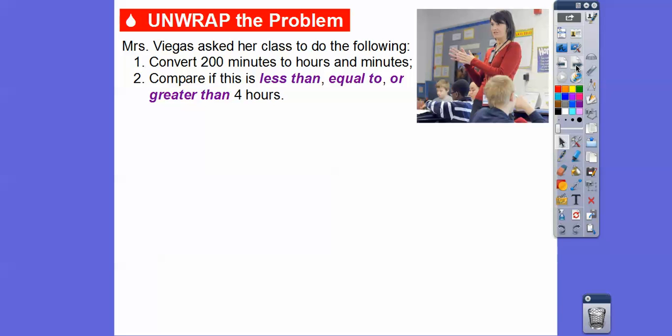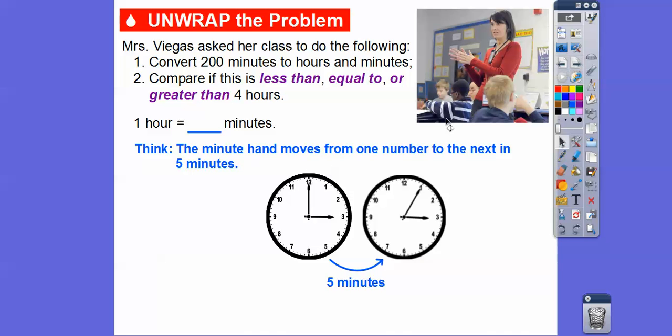Well, how many minutes are in an hour? Remember the minute hand moves from one number to the next, that is five minutes. So as we go from one number to the next, the minute hand goes five minutes. There's 12 numbers, so 12 times 5 equals 60. But most of you guys knew that there were 60 minutes in an hour.